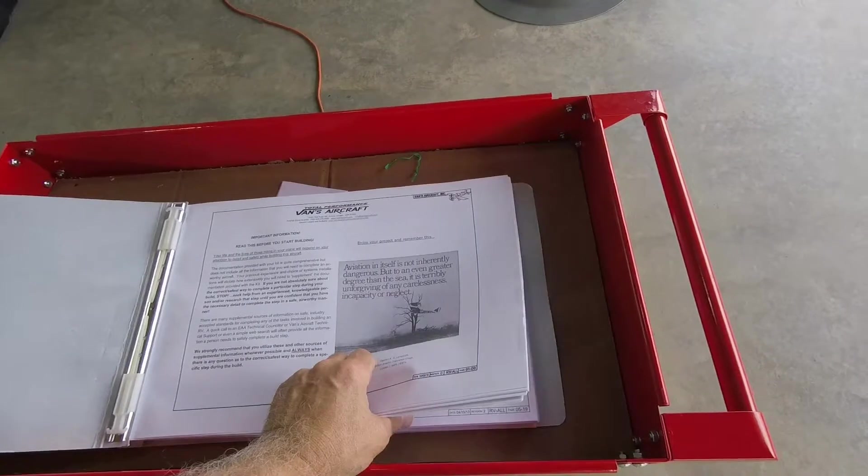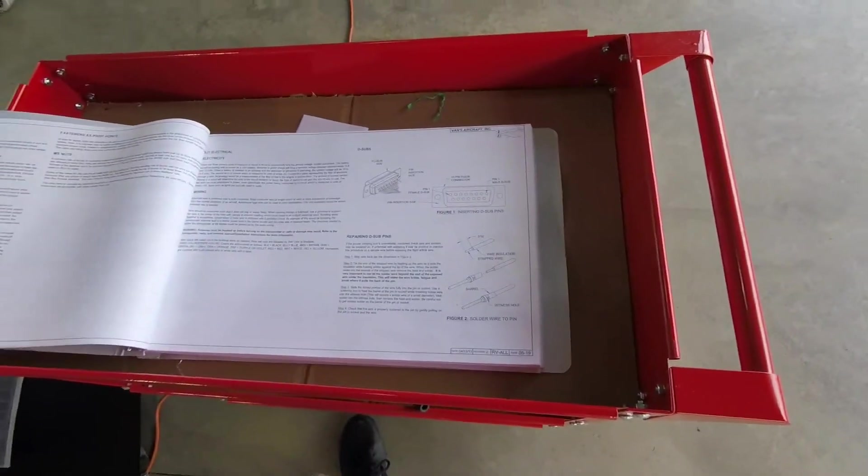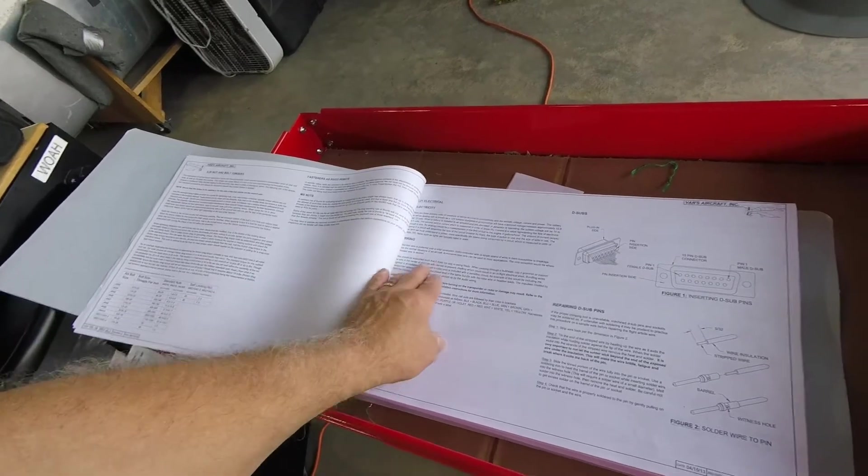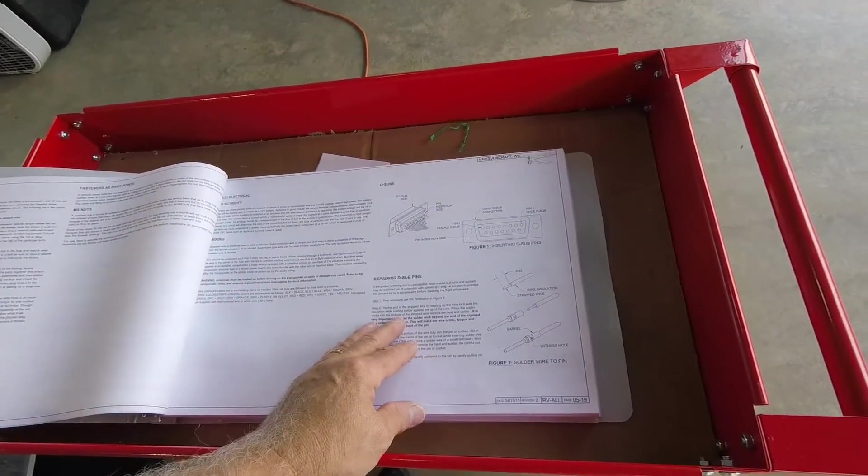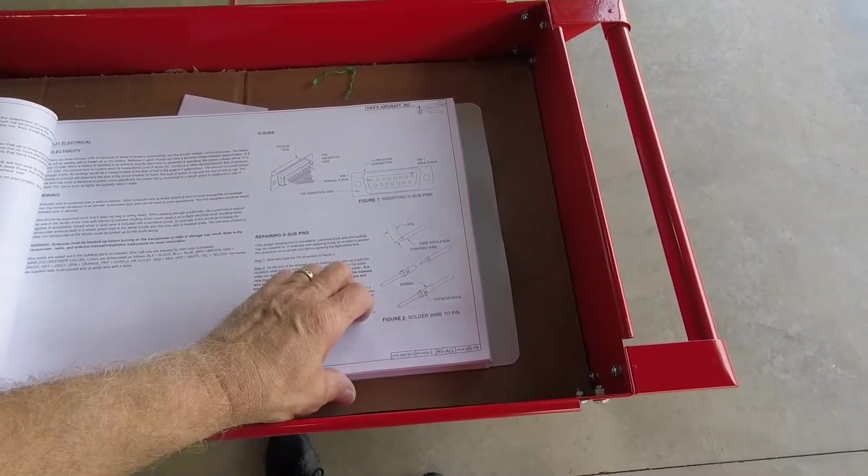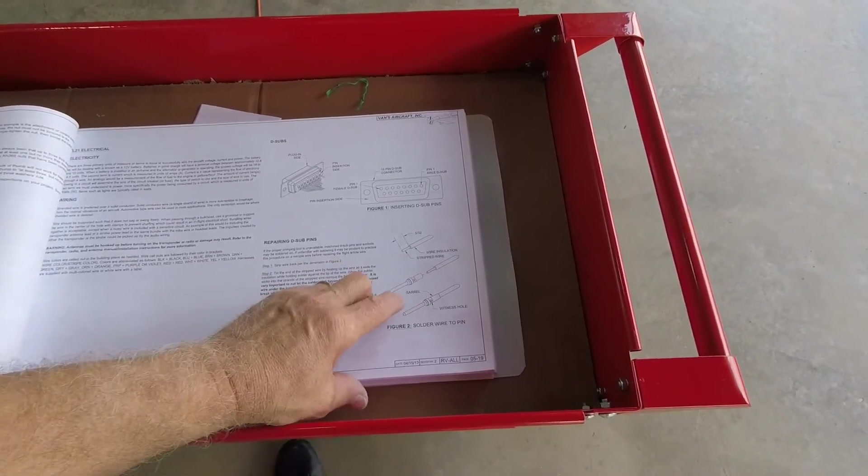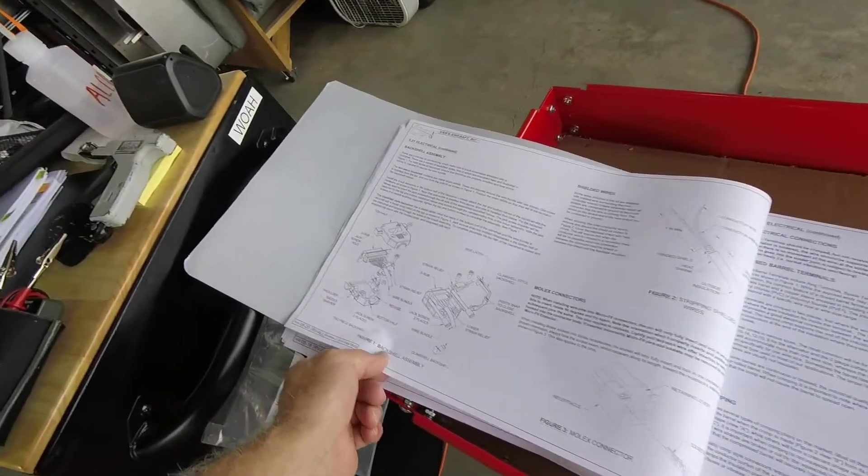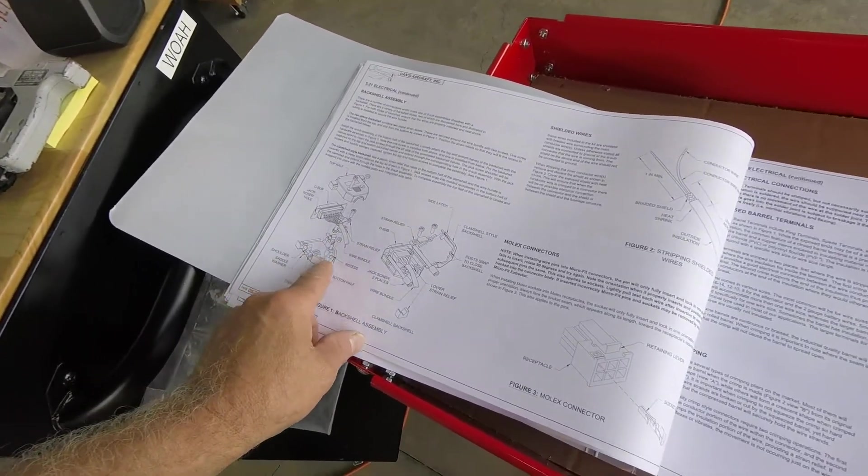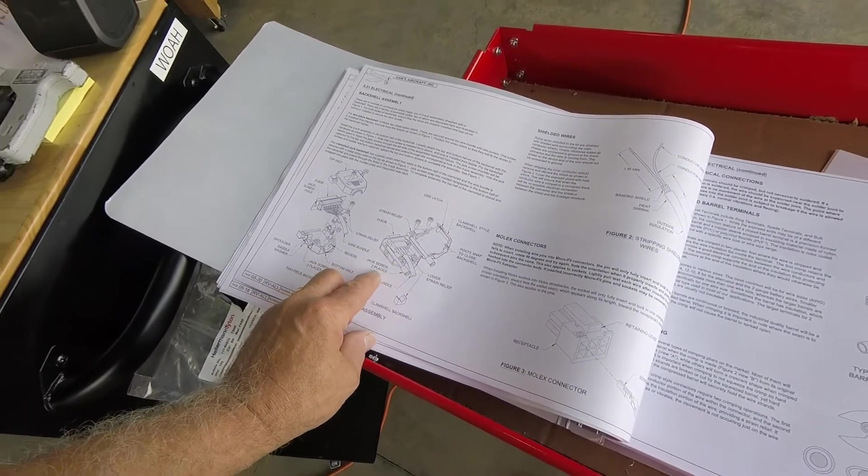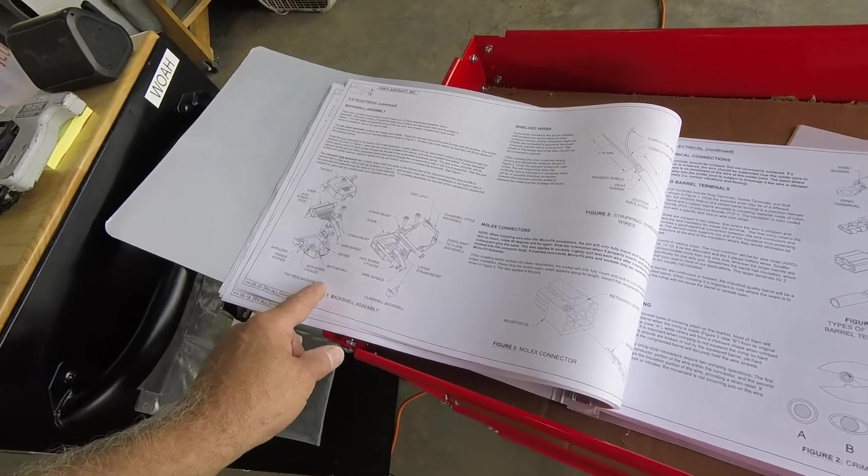You can always make sure you read section 5 in the manual. You get to section 5.21 on electricity and wiring. One of the first things they talk about is D-Sub pins. Pins and sockets all connect the same way. It shows you what to strip, the witness hole in the connector, how to put the back shell together. What they really don't reference in this one is grounding of the shielding like Garmin expects you to do.